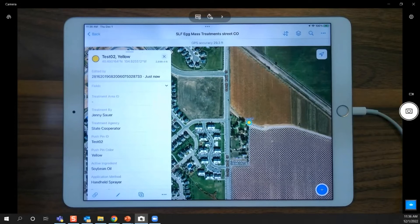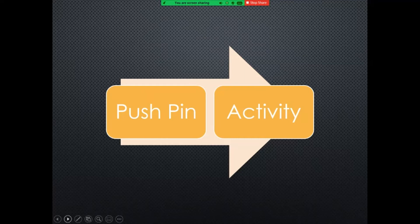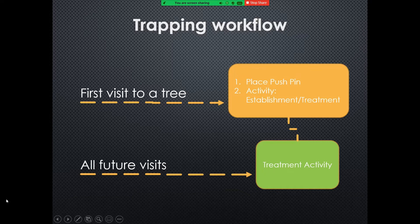Just remember: for state cooperators using the monitor points layer, it's two data entries on the first visit — placing the push pin and entering the establishment treatment activity. Then every visit that follows is just an activity, probably 'Monitor' or 'Remove Pin.' That first visit is the key one to get right: place the push pin, enter the activity as establishment treatment, and all future visits are just that activity.